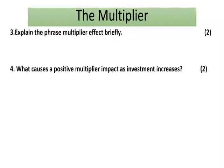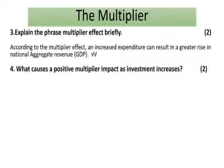Question number three: explain the phrase 'multiplier effect' briefly. Note that you are given only two marks, so you don't need to write seven paragraphs. A lot of learners make the mistake of putting too much effort into something worth very few marks. According to the multiplier effect, an increased expenditure can result in a greater rise in national aggregate revenue, as well as gross domestic product. That earns you two marks.